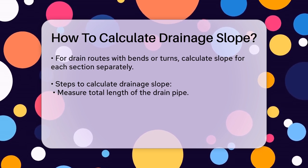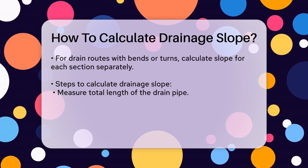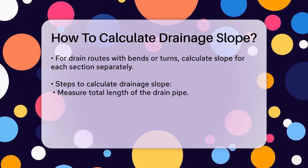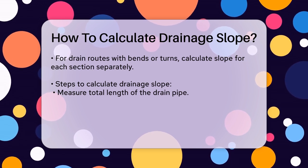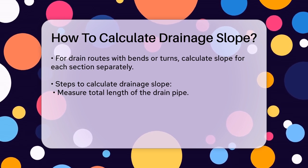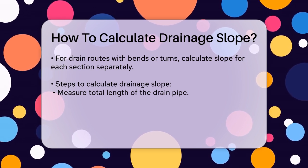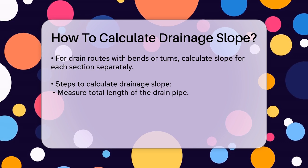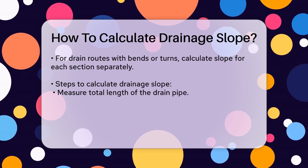If your drain route includes bends or turns, you'll need to calculate the slope for each section of the pipe separately. This ensures that the entire system maintains the required slope to function correctly.